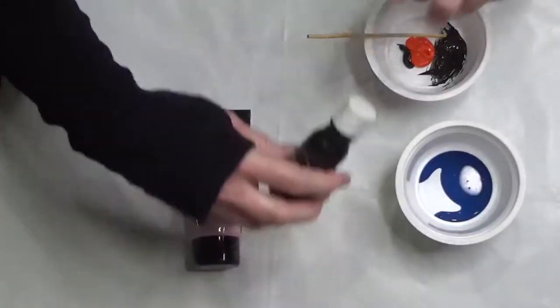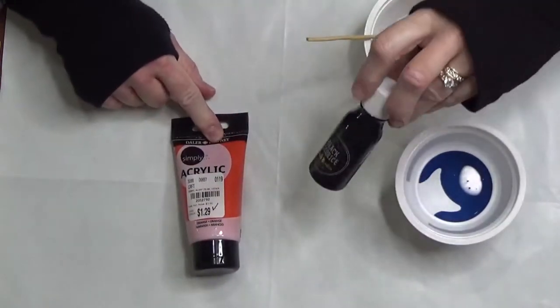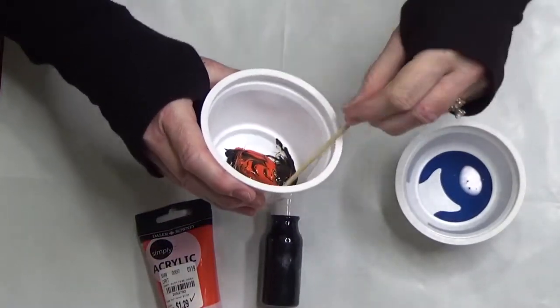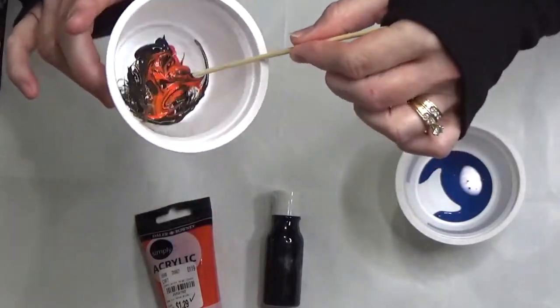Pretty cool. With these two paints it's about three parts of the orange to one part of the black. I'm just gonna keep on mixing that until I get how much I want and the right color brown that I want.